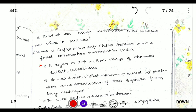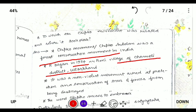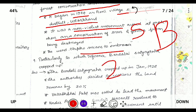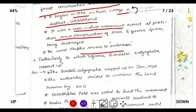Next: to which movement is the Chipko movement related, and where did it take place? The Chipko movement is a forest conservation movement in India. It began in 1973 in the Chamoli district of Uttarakhand, and it is a non-violent movement aimed at protecting the conservation of trees from being destroyed. 'Chipko' means to embrace. The Chipko movement was started by Sundarlal Bahuguna, who died in 2021 due to COVID-19.